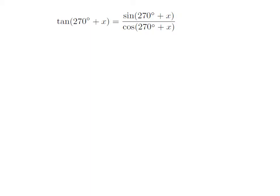As we know, tangent of theta equals sine of theta divided by cosine of theta. So tangent of 270 degrees plus x equals sine of 270 degrees plus x divided by cosine of 270 degrees plus x.